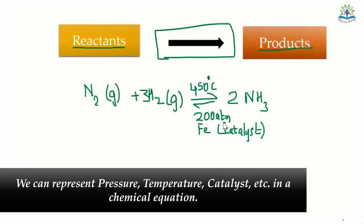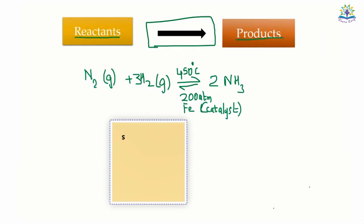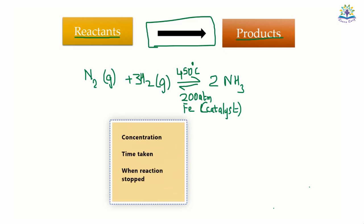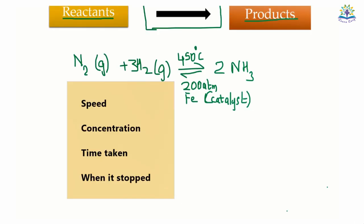But these chemical equations have their own limitations. We can't represent the speed of the reaction in the chemical equation. We cannot determine the exact concentration, mass, or quantity of the reactants used in the reaction. We also won't know the time taken by the reaction or when the reaction stopped.